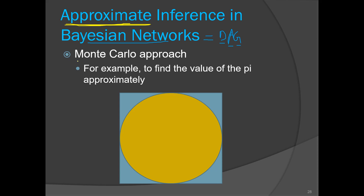One approximation algorithm is known as Monte Carlo. This name is derived from the city of Monte Carlo — in Monaco — which is famous for gambling. In gambling there is randomness or a luck factor, so Monte Carlo is essentially a synonym for randomness. It is a randomized algorithm.